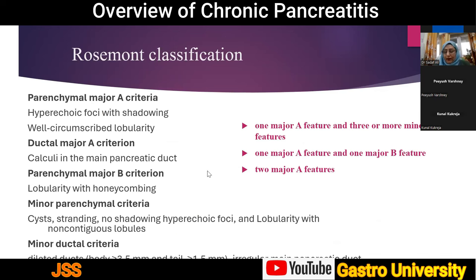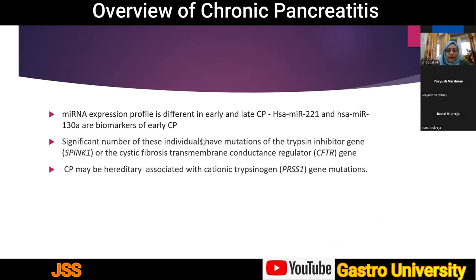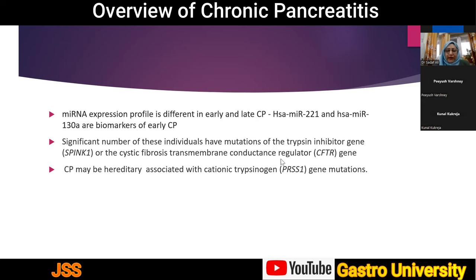Some experimental investigations show that the microRNA expression profile differs between early and late chronic pancreatitis — hsa-miR-221 and hsa-miR-130a are biomarkers of early chronic pancreatitis, though these are not widely available clinically. More practically, genetic mutation testing is available at tertiary healthcare genetic centers, where one can look for SPINK1, CFTR, and PRSS1 gene mutations, particularly when there is a family history of chronic pancreatitis.